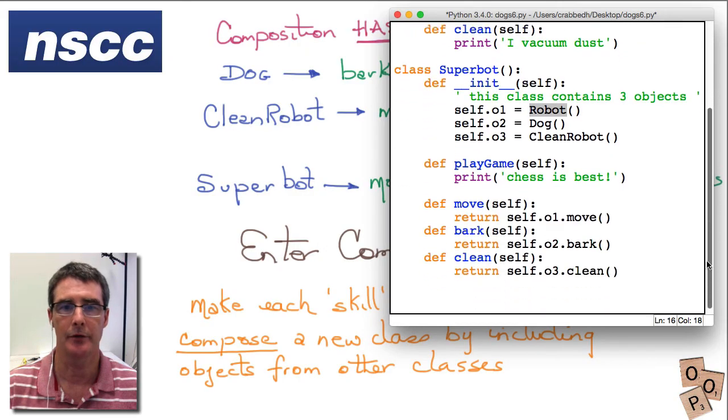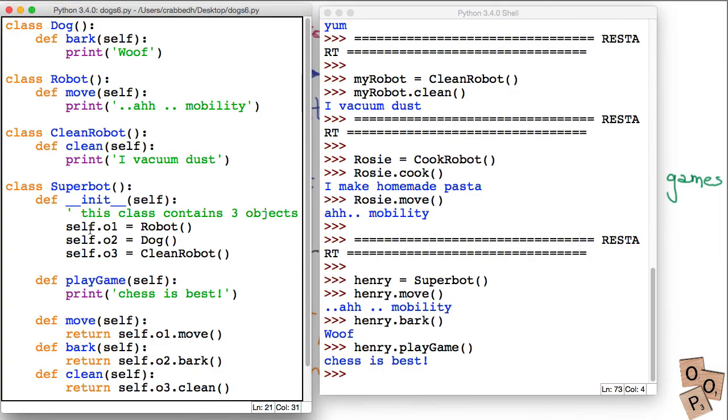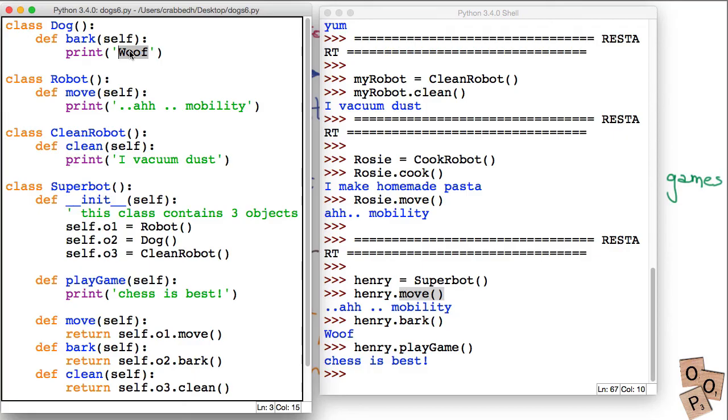Now let's see how we use the super bot and let's see how this works. Here's our complete definition. We want to create Henry. Henry is our super bot. And if we want to get Henry to move, we simply need to call the move method and Henry moves. Henry can also bark, play games, and clean.